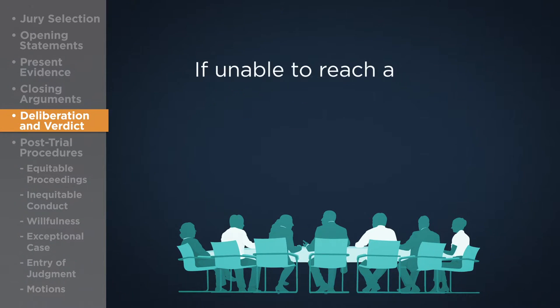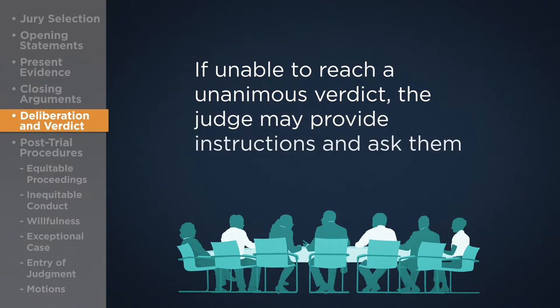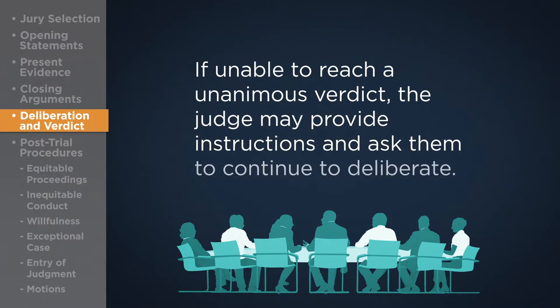If the jury is unable to reach a unanimous verdict, the judge may provide additional instructions and ask them to continue deliberating.